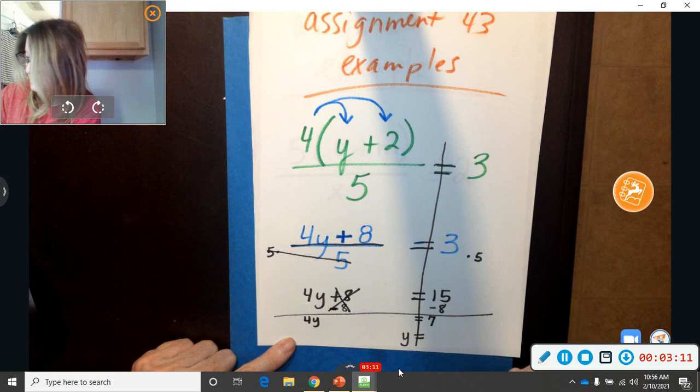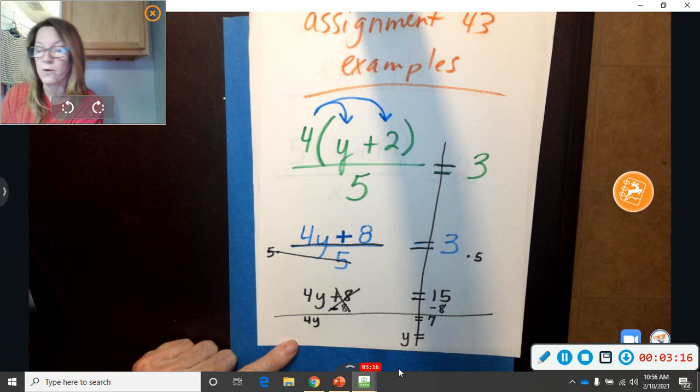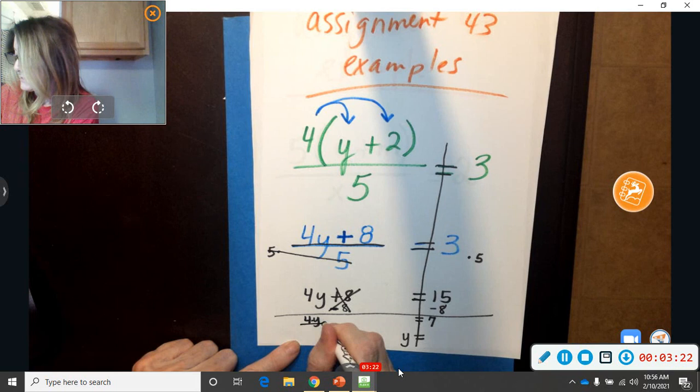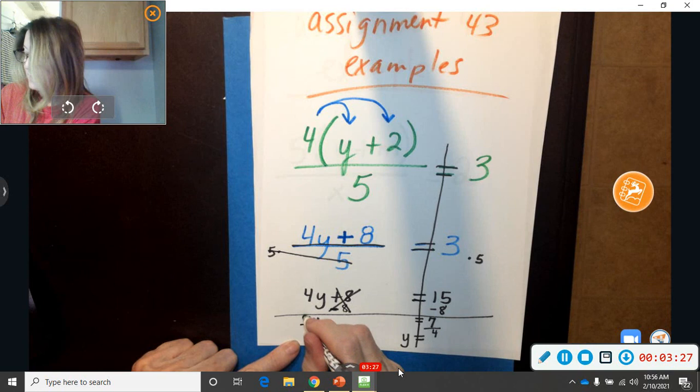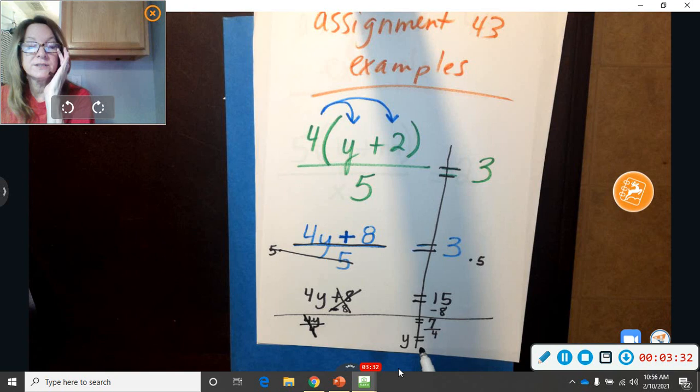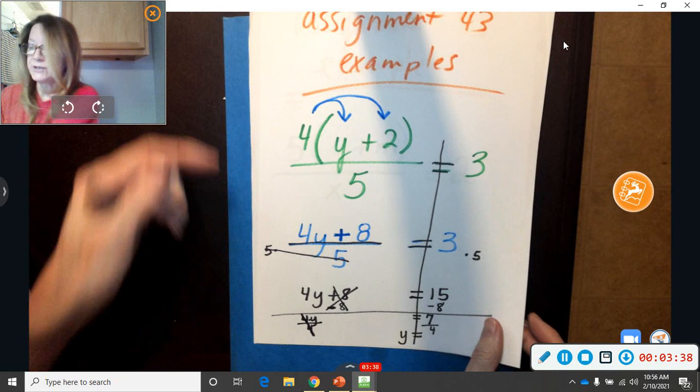Now, the y is still not all by itself. I need to get rid of the 4. And he's a squished 4, so that means he's a times 4. So the opposite of times is divide. This is the opposites right here. So the y is finally by himself. y equals whatever 7 divided by 4 is in the calculator. So you'll do it in the calculator. I just picked those random numbers. Now, that's the kind of equation you're used to.